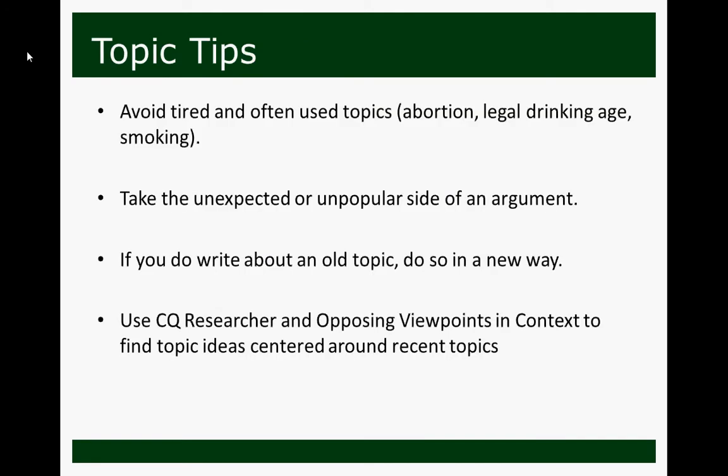Some tips when choosing topics: avoid tired and often-used topics — abortion, legal drinking age, and smoking are just three examples. Take the unexpected or unpopular side of an argument. If you are going to write about an old topic, try to do it in a new way, something your teacher perhaps hasn't heard before. You can use CQ Researcher and Opposing Viewpoints in Context to help find topic ideas centered around recent topics. Many English 101 research papers, persuasive speeches, and Speech 107 assignments require recent topics, so those two databases can help.